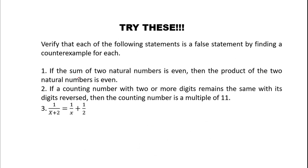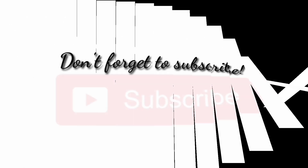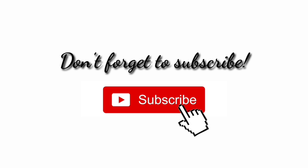Try this: verify that each of the following is a false statement by finding a counter example. Number 1: if the sum of two natural numbers is even, then the product of the two natural numbers is even. Number 2: if a counting number with two or more digits remains the same when the digits are reversed, then the counting number is a multiple of 11. Number 3: 1/(x + 2) = 1/x + 1/2. Thank you so much and God bless everyone for your journey in mathematics in the modern world.